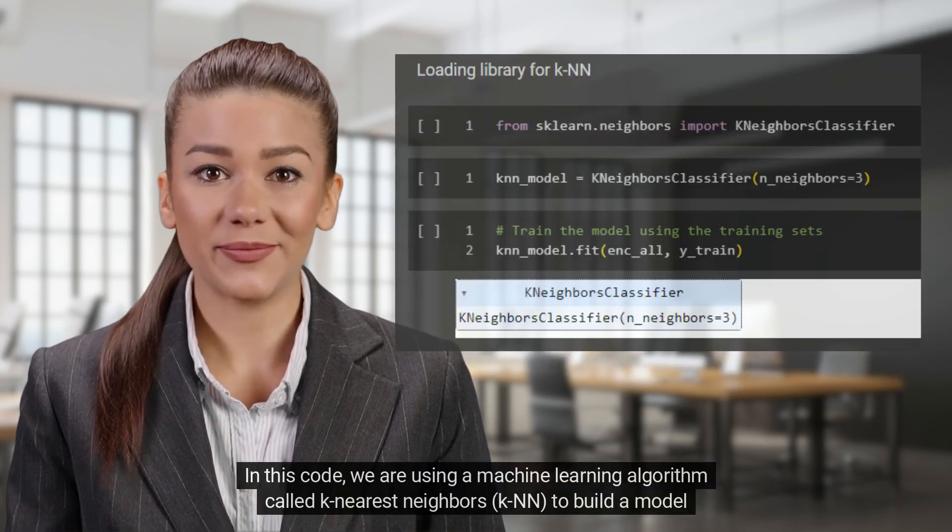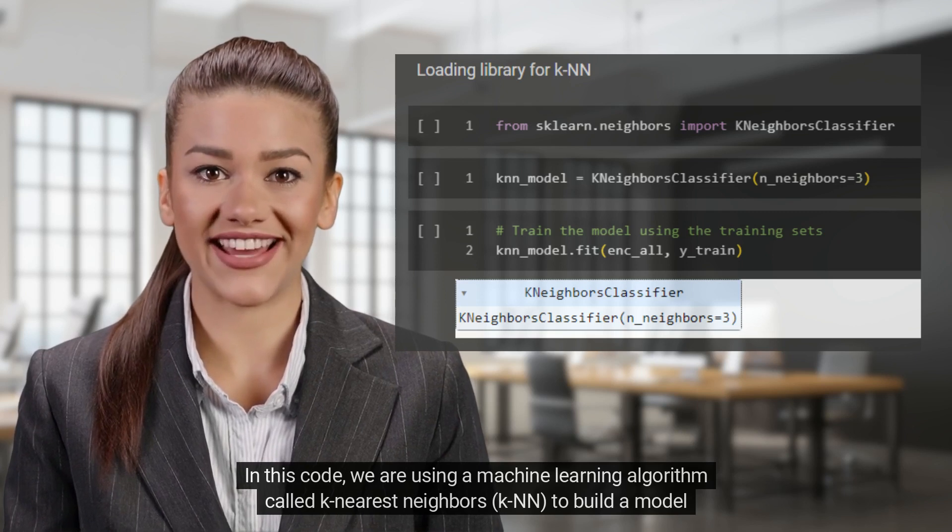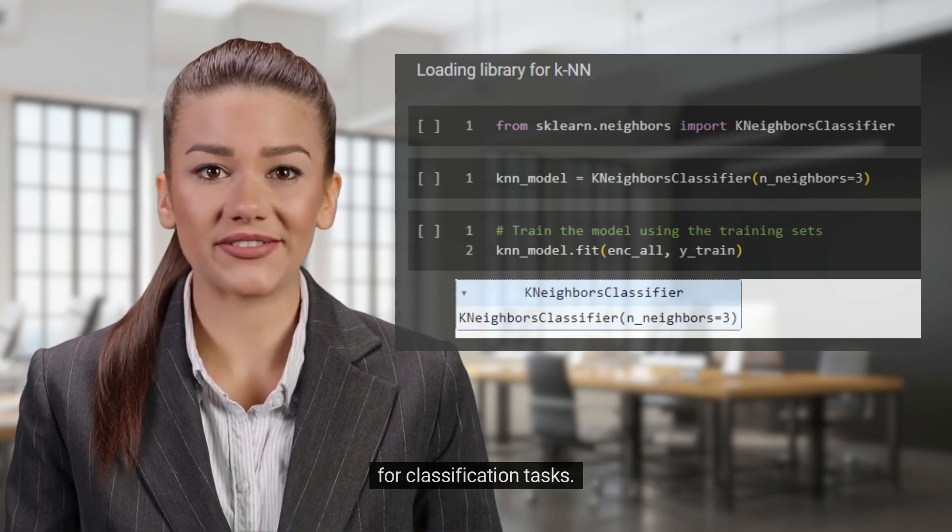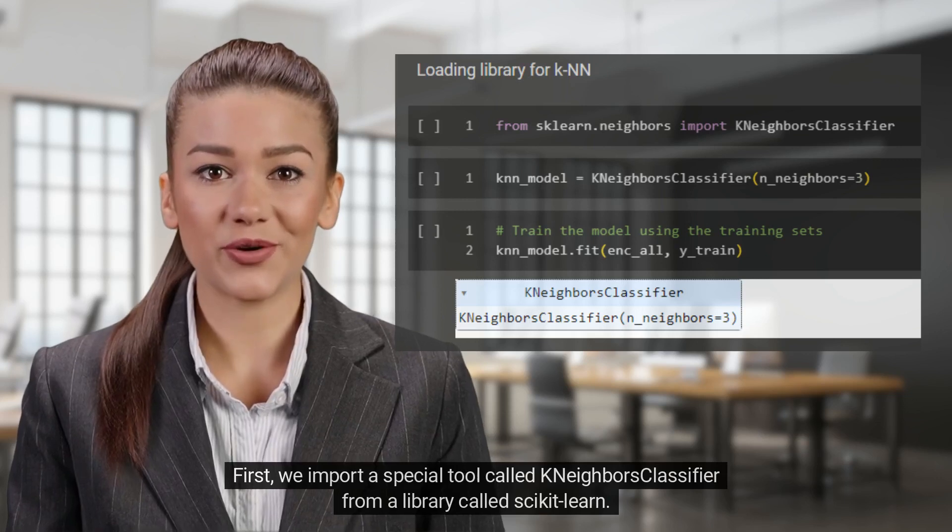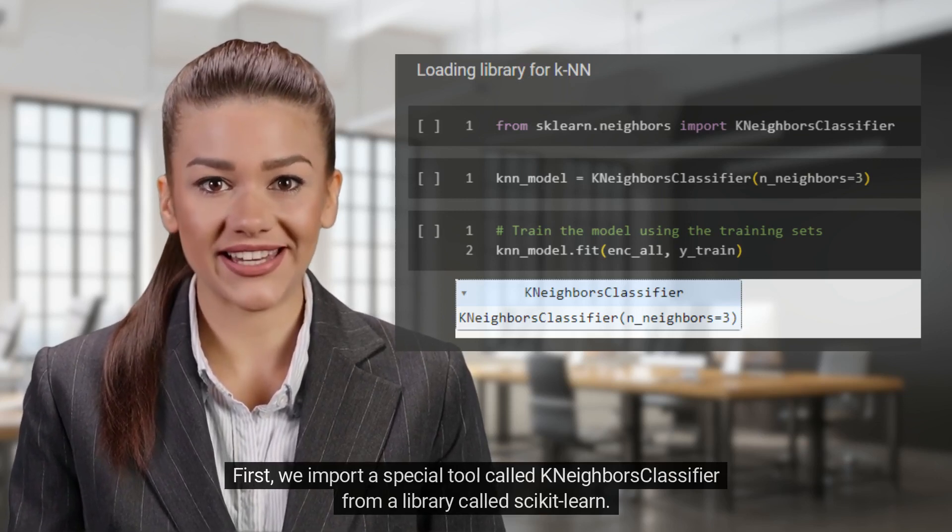In this code, we are using a machine learning algorithm called K-nearest neighbors, K-N-N, to build a model for classification tasks. First, we import a special tool called KNeighborsClassifier from a library called scikit-learn. This tool helps us implement the K-N-N algorithm easily.